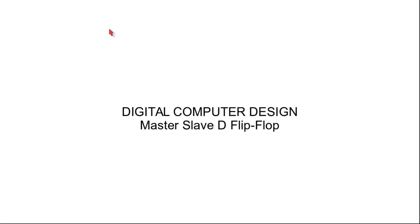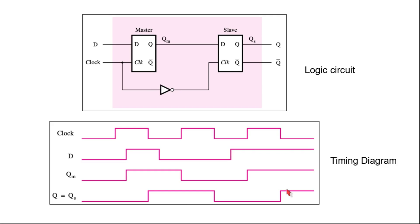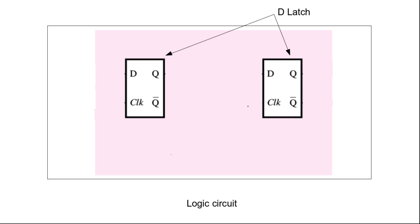Welcome to today's class. We will talk about the master-slave D flip-flop. Here is the logic circuit for the master-slave D flip-flop, and we will try to understand its working using a timing diagram. The logic circuit consists of two D latches — the first D latch is called the master and the second D latch is called the slave.